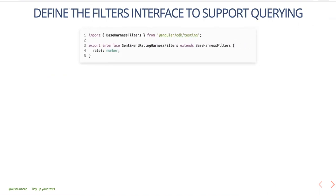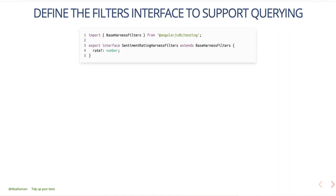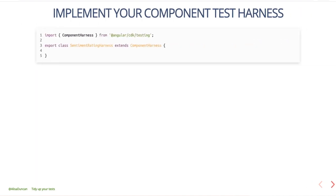The first thing we want to do is define the filter interface to support querying, because being able to search by a particular filter is powerful. We create an interface SentimentRatingHarnessFilters and extend from BaseHarnessFilters. We want to be able to search by rate, so that's how we define the filter. Next, to implement our component harness, we create a class SentimentRatingHarness and extend off the base class ComponentHarness. We also define the host selector, which should match the selector of the component we're writing this test harness for — in our case, app-sentiment-rating.